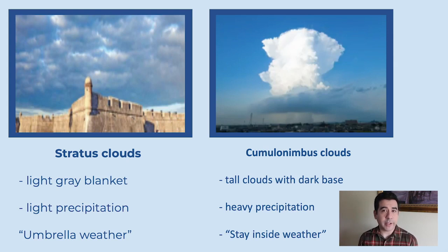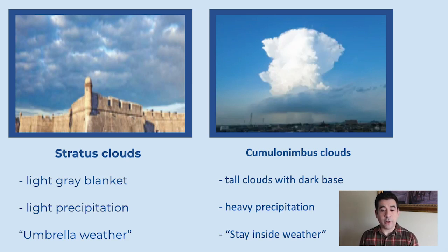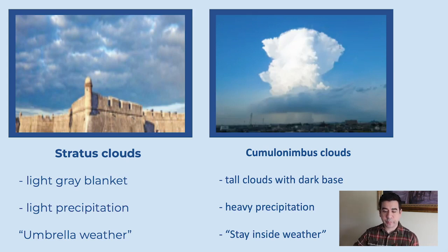But if there's cumulonimbus clouds, that's a different story. Cumulonimbus clouds are those tall clouds with a dark base. And when there are cumulonimbus clouds, there's going to be some heavy precipitation — you might have some storms going on. I like to call that the stay inside weather, because my dog Leo would have taken one step outside and said, 'No thank you, I'm just gonna stay inside.'